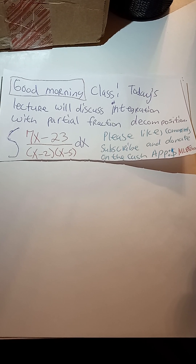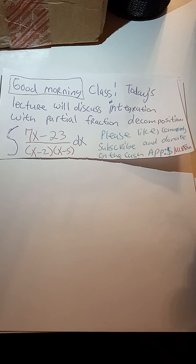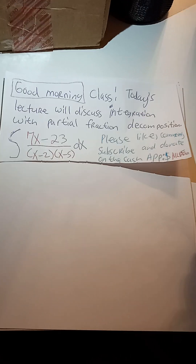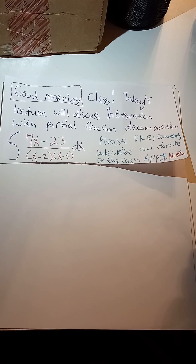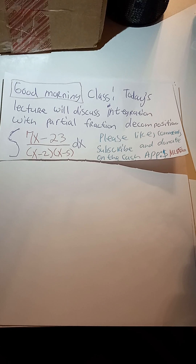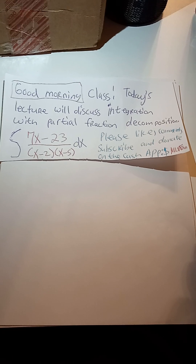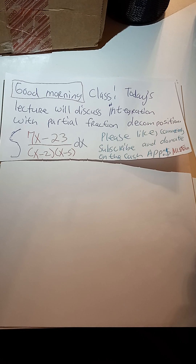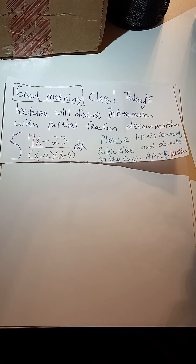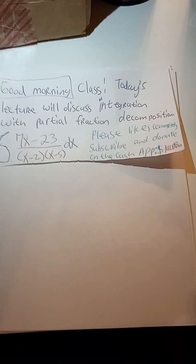Here we see the integration of (7x minus 23) divided by (x minus 2)(x minus 5) dx. First, we have to find the restrictions in the denominator and substitute back into the function by doing A times a factor plus B times a factor. The next stage will be the integration, which is the calculus portion. So let's get started.